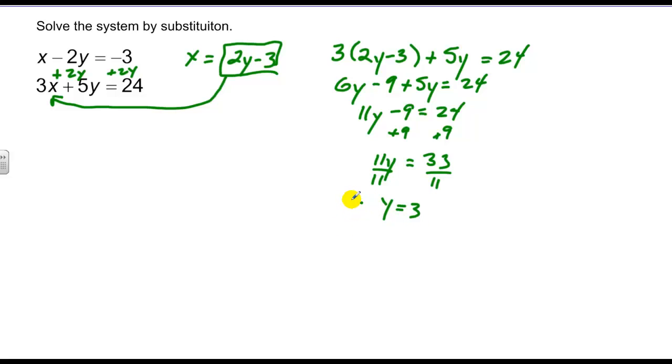Knowing that y is equal to 3, I'm going to plug back into this equation right here because I know that's what x is equivalent to. And say x is equal to 2 times 3 minus 3, or x equals 3. So my solution is the ordered pair 3, 3.